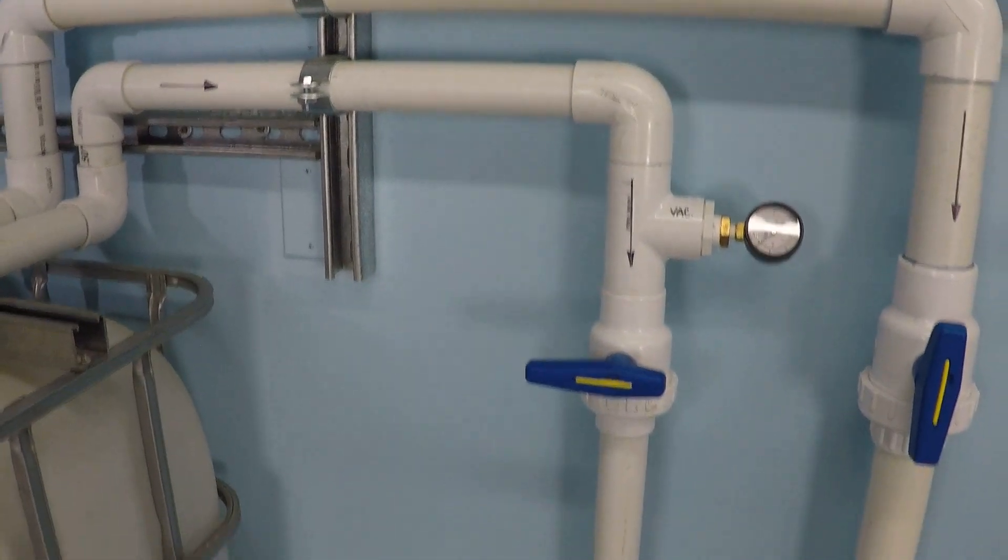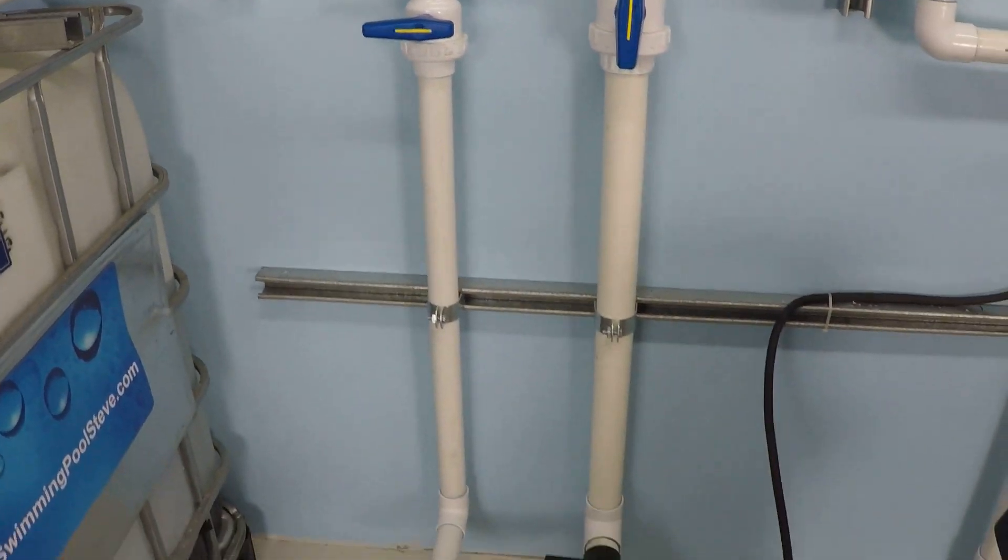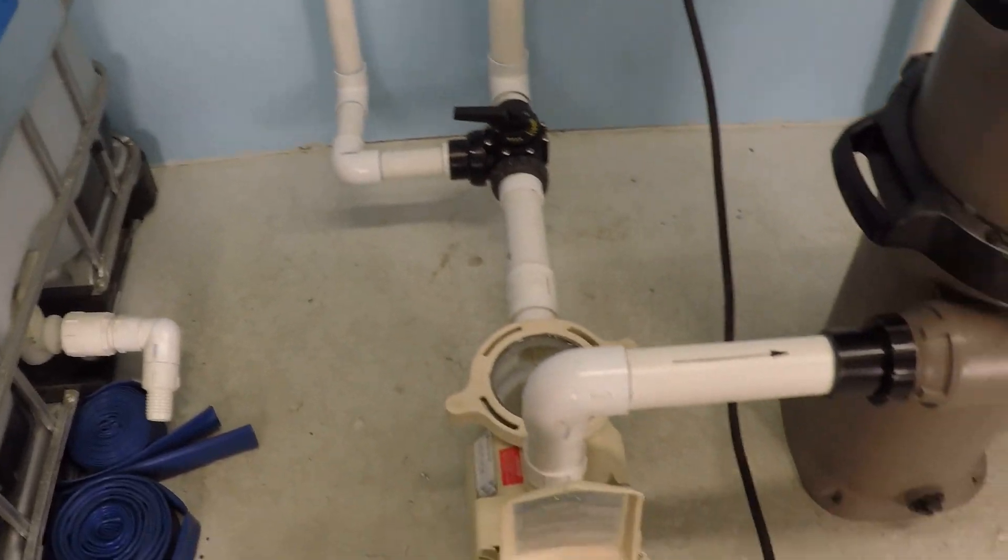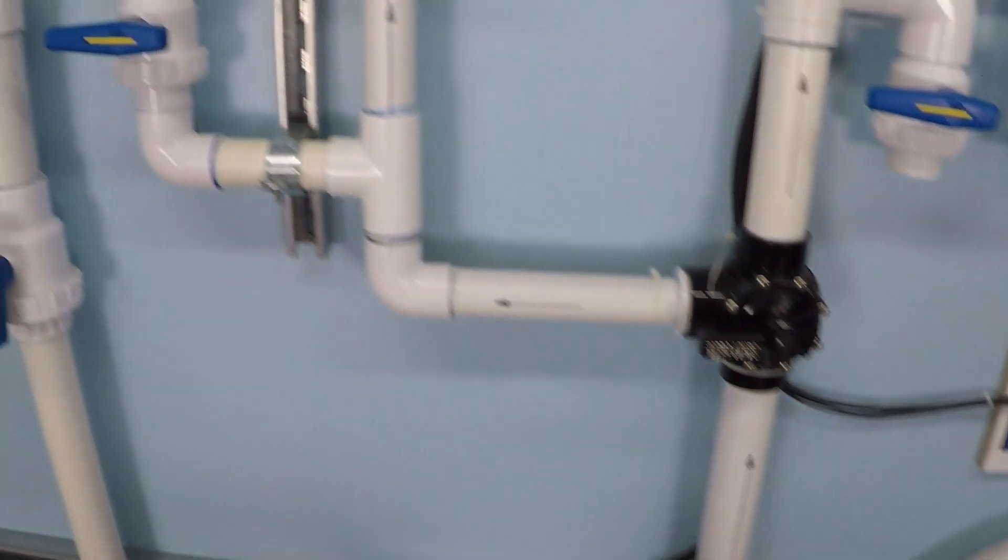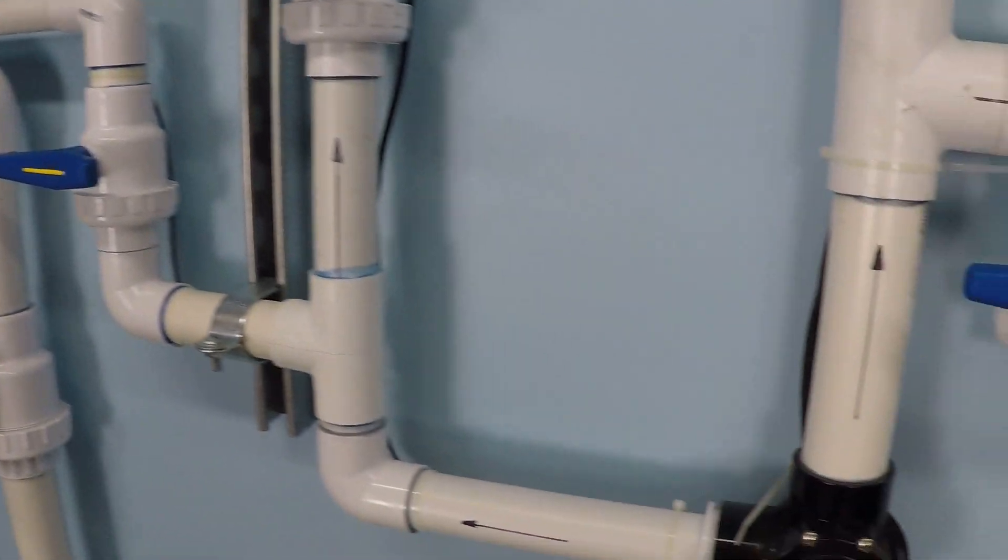So as you can see, inch and a half suction line is closed. We're going to be using the two inch line pump filter. Everything is closed off over here on the inch and a half bypass.